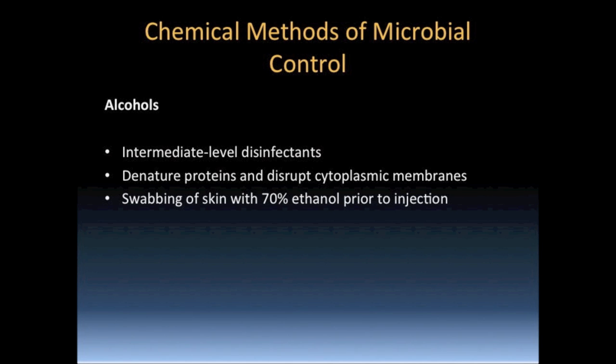Alcohols may be used as intermediate-level antimicrobial agents. Commonly used types of alcohol include ethyl alcohol and isopropyl alcohol. Ethyl alcohol, also known as ethanol or grain alcohol, is a non-irritating, relatively inexpensive type of alcohol. Isopropyl alcohol, also known as rubbing alcohol, is more effective and less expensive than ethanol. Alcohol concentrations of 70–90% act to disrupt cell membranes and denature proteins. 100% alcohol solutions are not microbicidal because they dehydrate the cell and inhibit their growth but do not denature proteins to kill them.